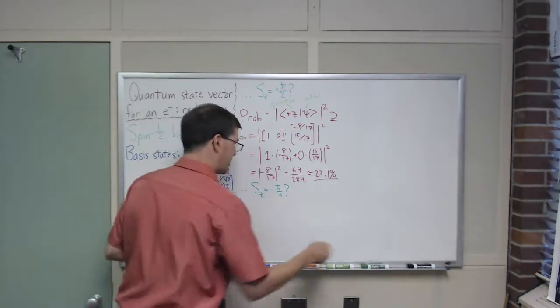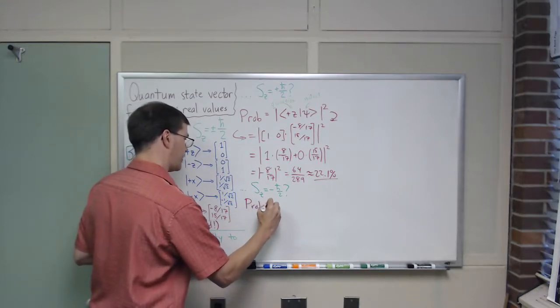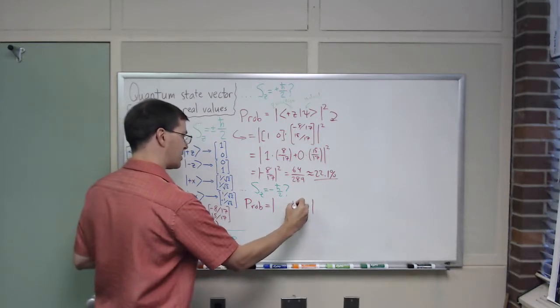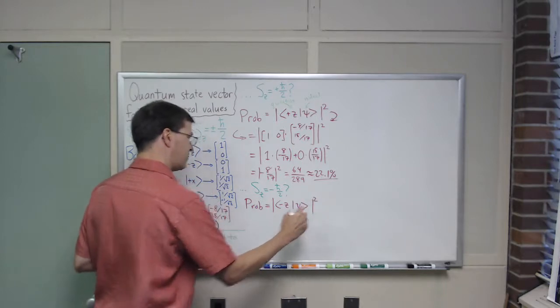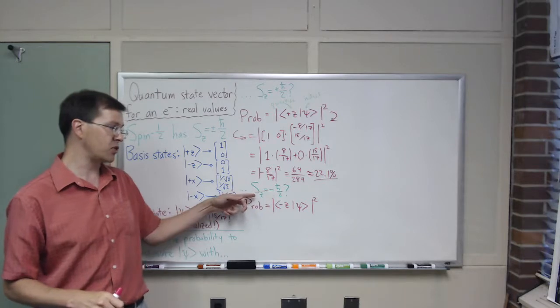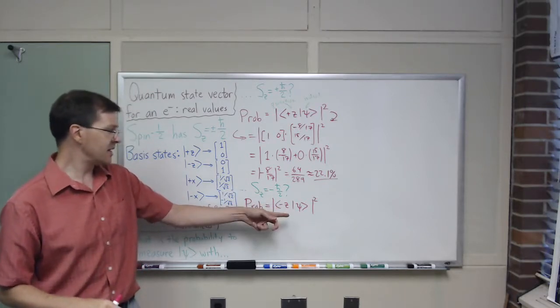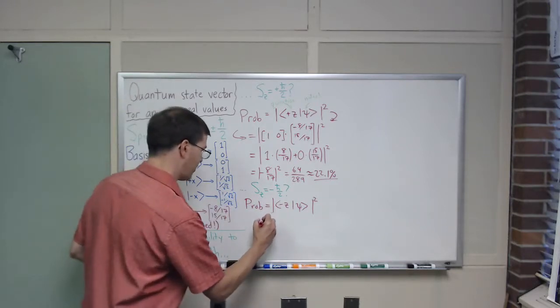To do this, I would then say that my probability is going to be equal to, again, it's going to be an absolute square, I know I start in state psi, but this time I'm putting the minus z state there, because that's the, minus z is what I'm now asking the question, are you going to give me minus h bar over 2 for z, the minus z state does that. So here's my initial state, here's the question I'm asking, take the absolute square, what's that give me? It's going to be very similar, right?